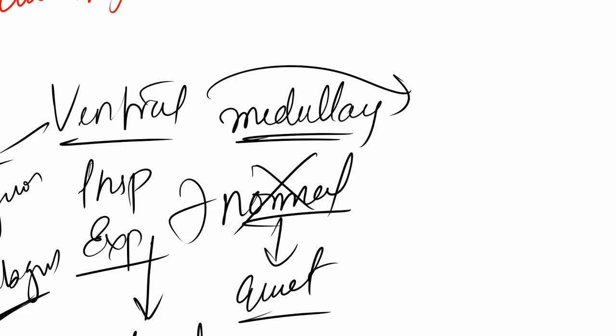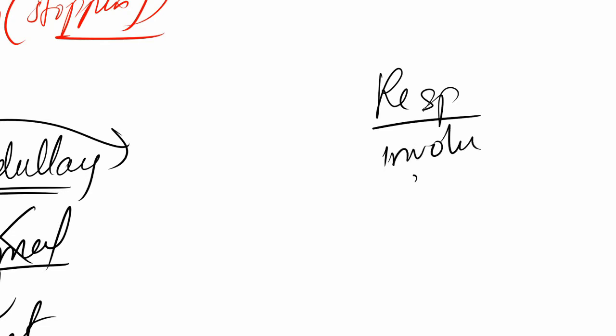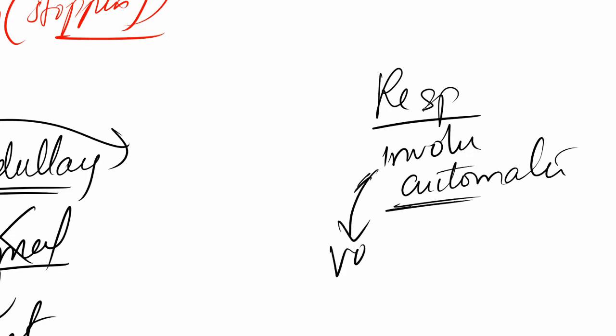Respiration is involuntary and automatic, but it can be made voluntary. You can take control over your breathing, but only for a short period. If you try to stop breathing, you might manage 40 seconds, 60 seconds, maybe two minutes — but after that it comes back to involuntary control by itself. Even if you forced breathing, eventually it returns to involuntary control.